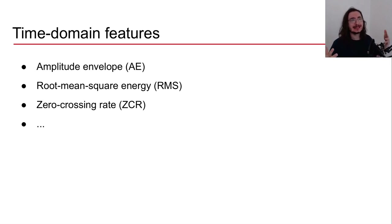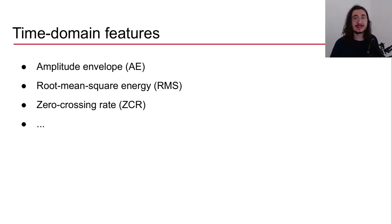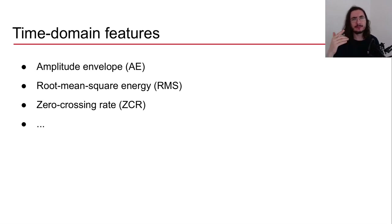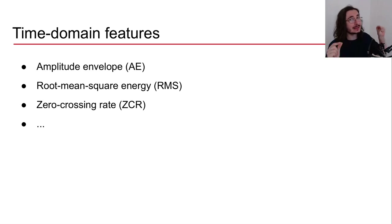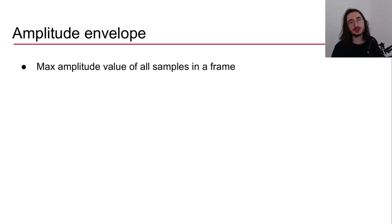We can take the values we have for each frame and aggregate them using statistical means like mean, sum, or more sophisticated methods like Gaussian mixture models. If you don't remember the definition of a frame or the categorization of audio features, I highly suggest you check out the earlier video in this series. The first time domain feature we'll look into is the amplitude envelope.